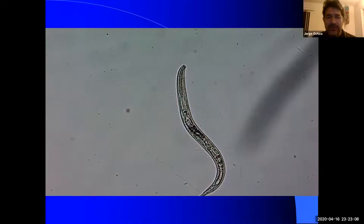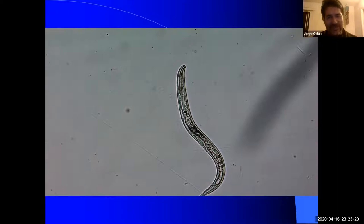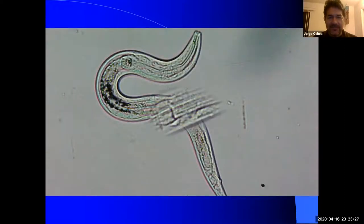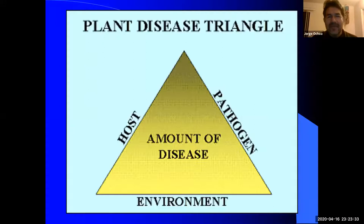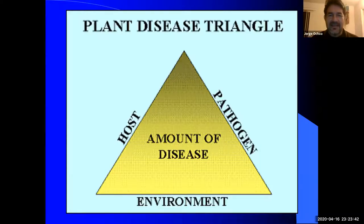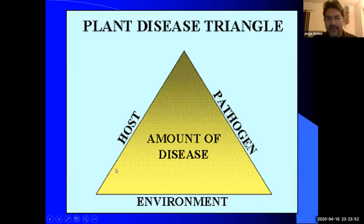Nematodes are considered a pathogenic organism — in agriculture they are treated as a pathogen even though caused by a worm. When looking at disease infection, there are three very important components that are necessary. This is referred to as the disease triangle, and all three components must be present for disease to develop.